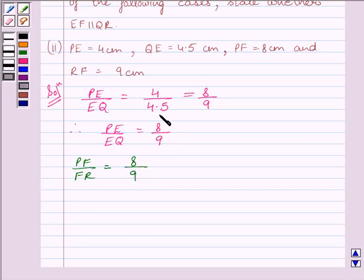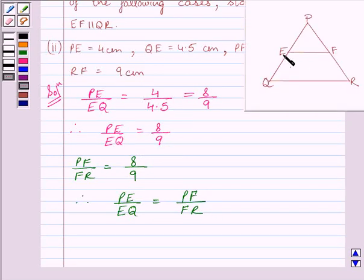Clearly, we can see PE upon EQ is equal to PF upon FR. So this implies EF is parallel to QR. Since EF is dividing PQ and PR in the same ratio, by converse of basic proportionality theorem, we get EF is parallel to QR.